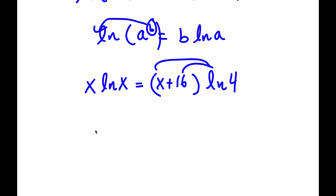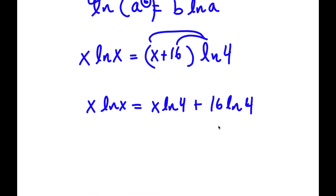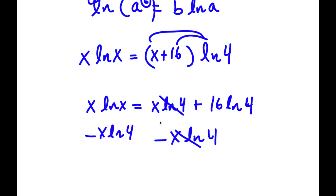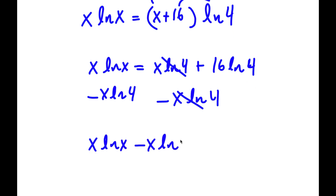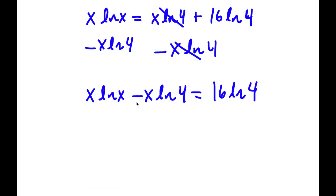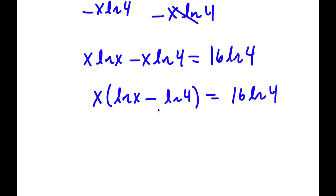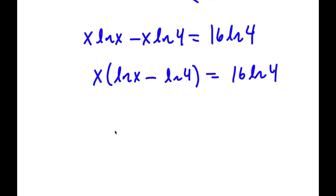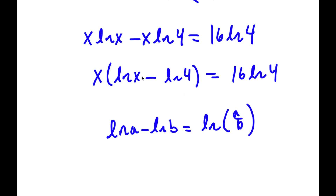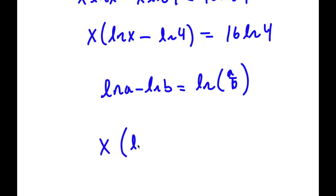Now if I distribute ln 4, I get x times ln x is equal to x times ln 4 plus 16 times ln 4. I subtract x times ln 4 from both sides, so I have x times ln x minus x times ln 4 is equal to 16 times ln 4. Factoring out x gives x times the quantity ln x minus ln 4, equal to 16 times ln 4. Since ln a minus ln b equals ln of a over b, this becomes x times ln of x over 4 equals 16 times ln 4.